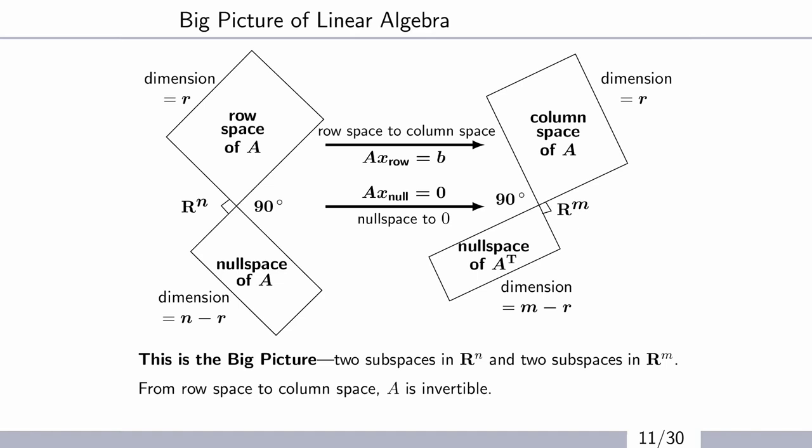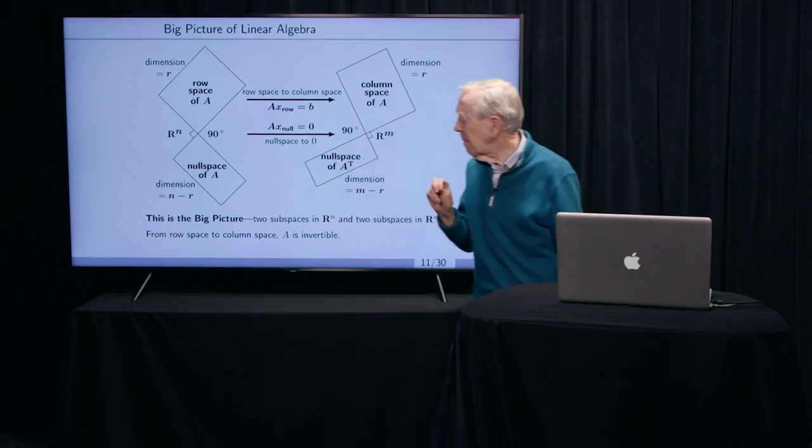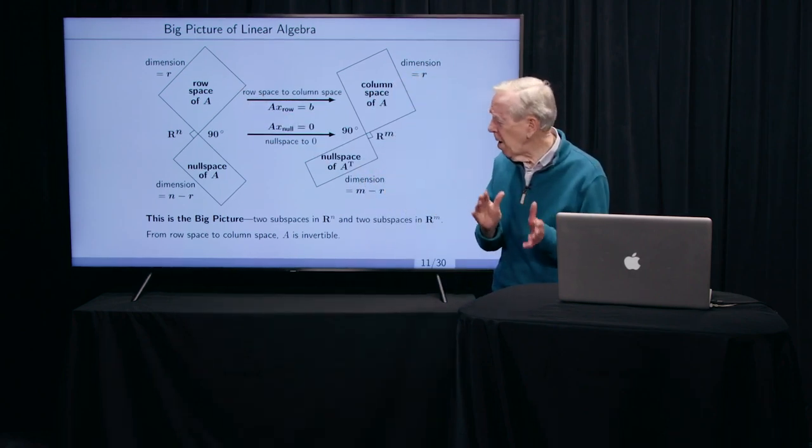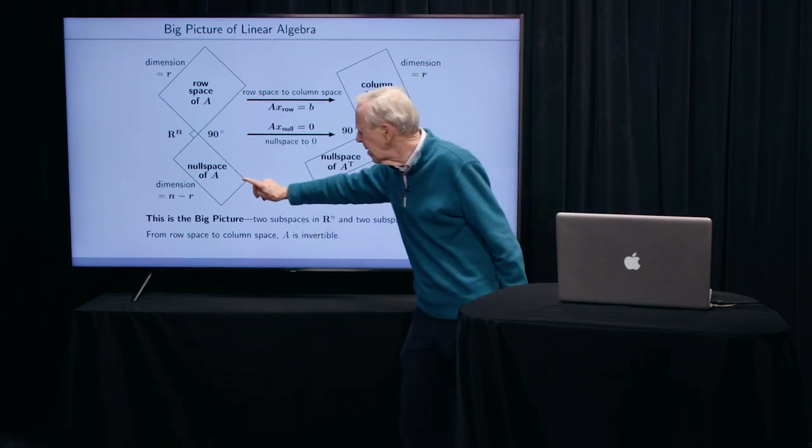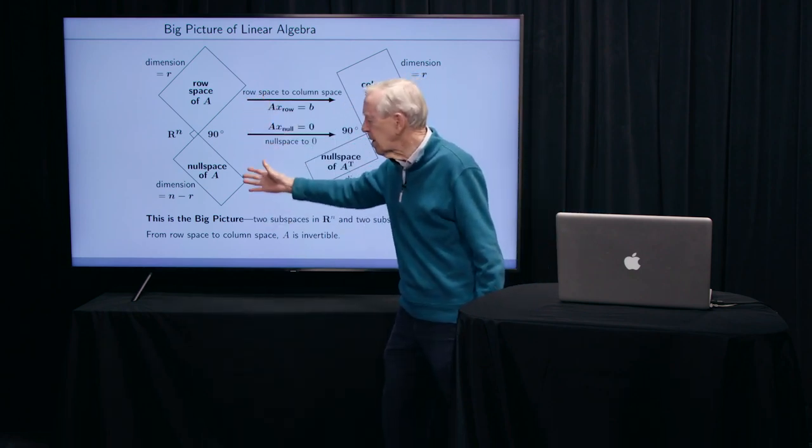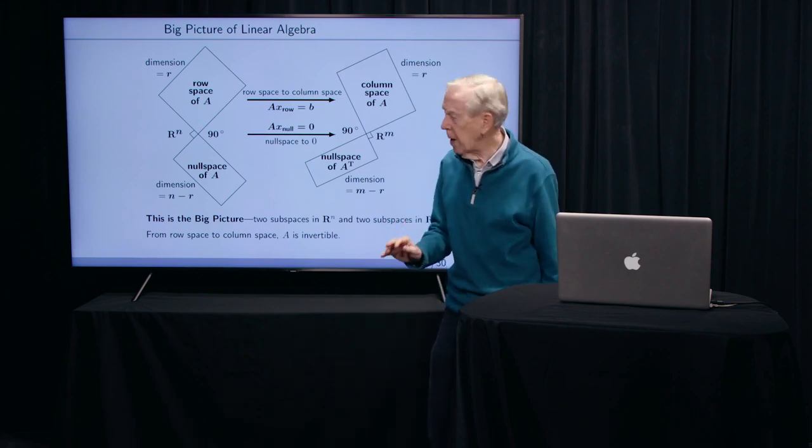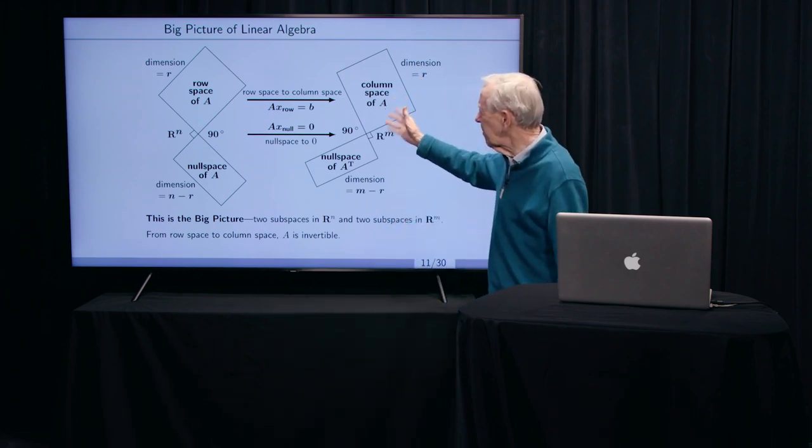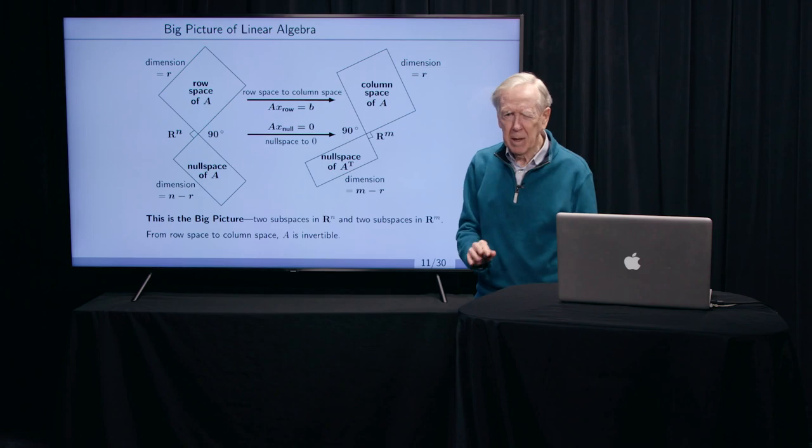It says the row spaces there. Those are rows of the matrix, independent rows of the matrix. That's why I don't put in all the rows. There are m rows, but I only put in independent ones. So that might be a smaller number r, r the rank. And here are the solutions, the guys perpendicular to them. This is the rows of the matrix. These are the vectors perpendicular to it. These are the columns of the matrix. These are the vectors perpendicular to the columns.